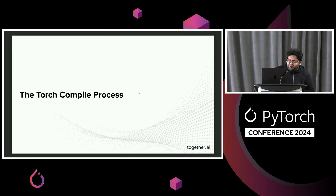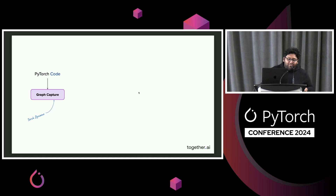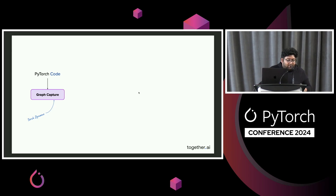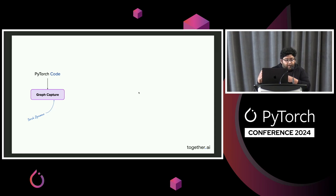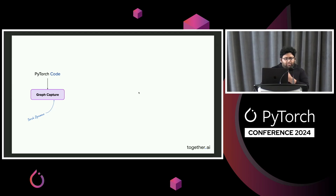So how does TorchCompiler essentially work? I think many of us are already familiar with this, so I'll run through it quickly. It takes PyTorch code and runs it through the core, which is TorchDynamo — fundamentally tracing through your call stack right down to the bytecode, extracting all of the ops, and generating a graph of computation. This is specifically in an inference context; in training, you would also have AOT autograd that generates the backward pass.